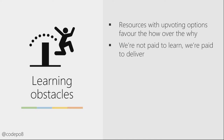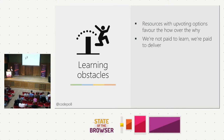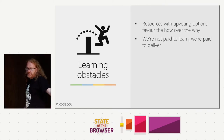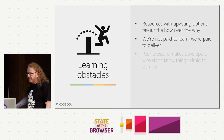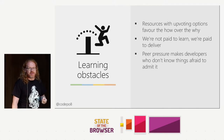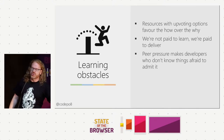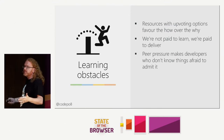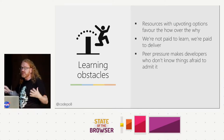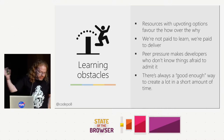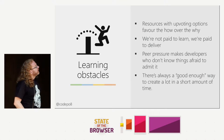Peer pressure makes developers afraid to admit they don't know things. At JavaScript conferences people ask 'who uses this new API?' and everybody raises their hand even though nobody does — nobody wants to be seen as uncool. And we're doing that to ourselves. There's always a good-enough way to create a lot in a short amount of time — 'use Bootstrap' — these kind of answers. So we take shortcuts.